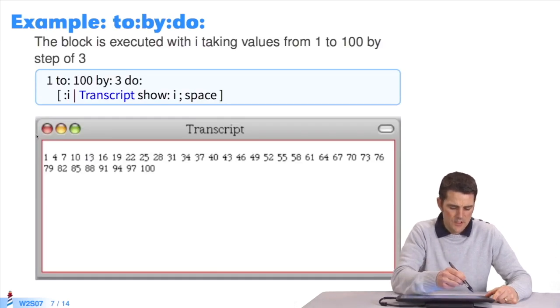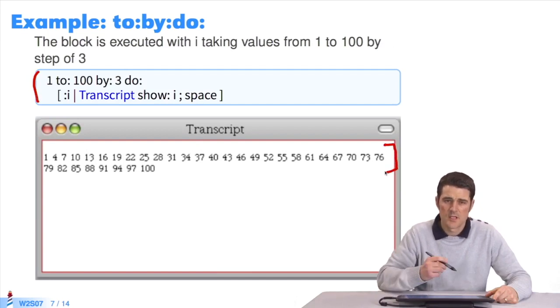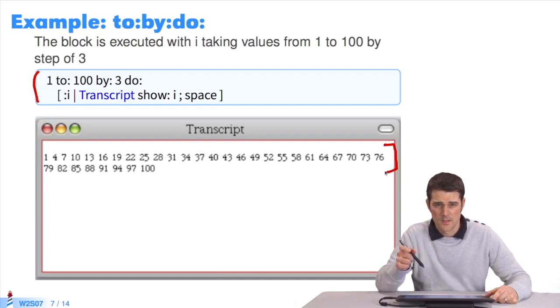You can see what happens when you execute this bit of code. You can see i went from 1 to 100 with an increment of 3 each time.